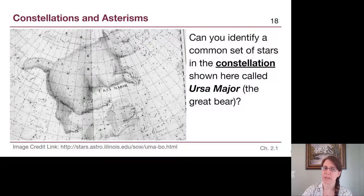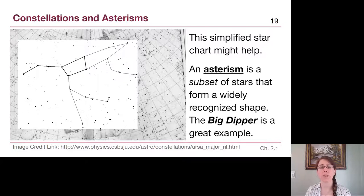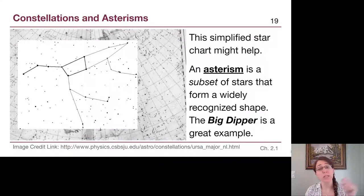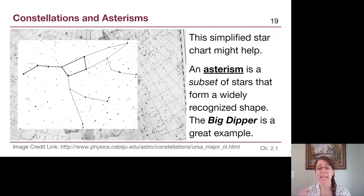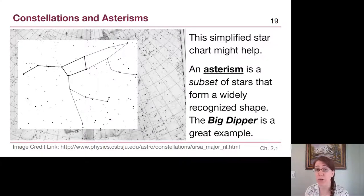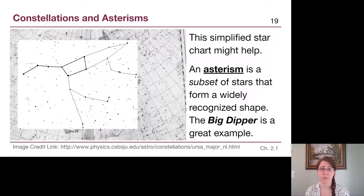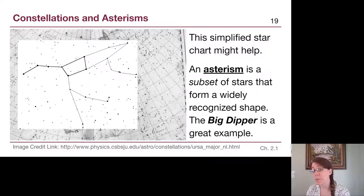If we look at the connect-the-dots kind of shape, we see the full Great Bear with a far too long tail to be a standard bear. But we see the Big Dipper — seven stars out of the entire constellation that are brighter than the rest, forming a pattern that is much more well known. The Big Dipper has meaning throughout history. That brings up a term we need to know: an asterism is a subset of stars that form a widely recognized shape. The Big Dipper is probably the best example, and the Little Dipper is another — a subset of Ursa Minor.